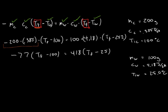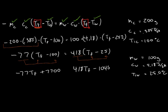Now, we'll take the negative 77 in the front and multiply it by both terms inside the parentheses. If we do this, we'll get negative 77 Tf plus 7,700. If we do the same with the 418 times both terms in this parentheses on the right, we will get 418 Tf minus 10,450.